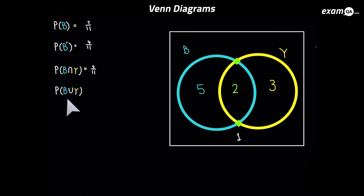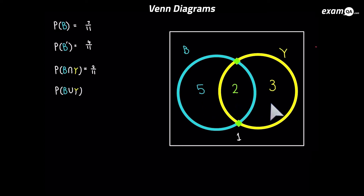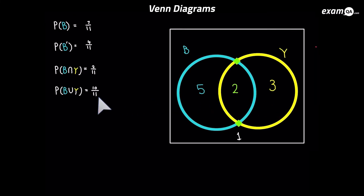The last one is the probability of B or Y. B or Y is everything in the circles — the 5, that belongs to B or Y; the 2, that's part of B or Y; and the 3, that is also part of B or Y. So we add up all three numbers: 5 plus 2 plus 3 gives us 10. And of course it's 10 over the total, being 11.